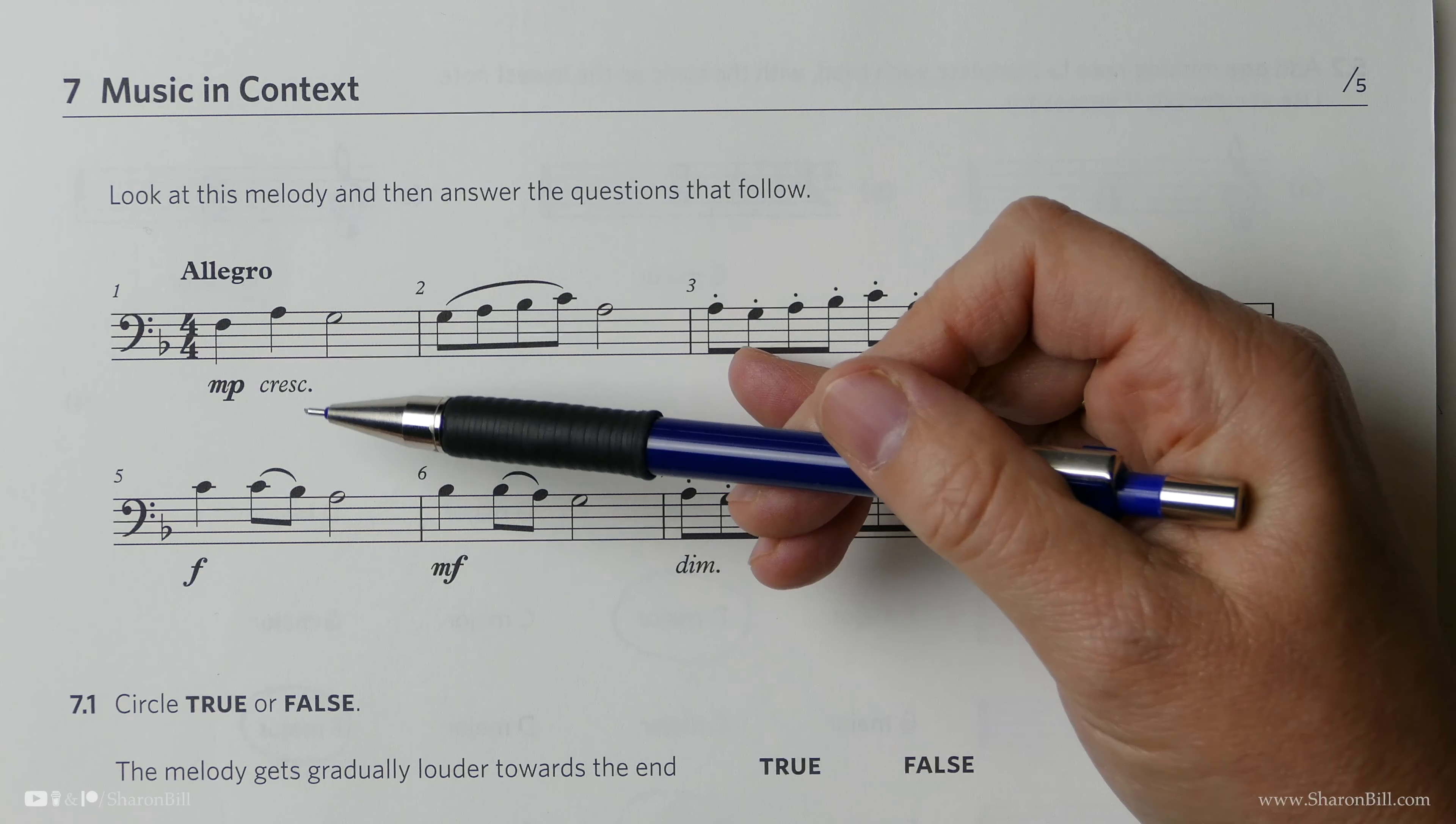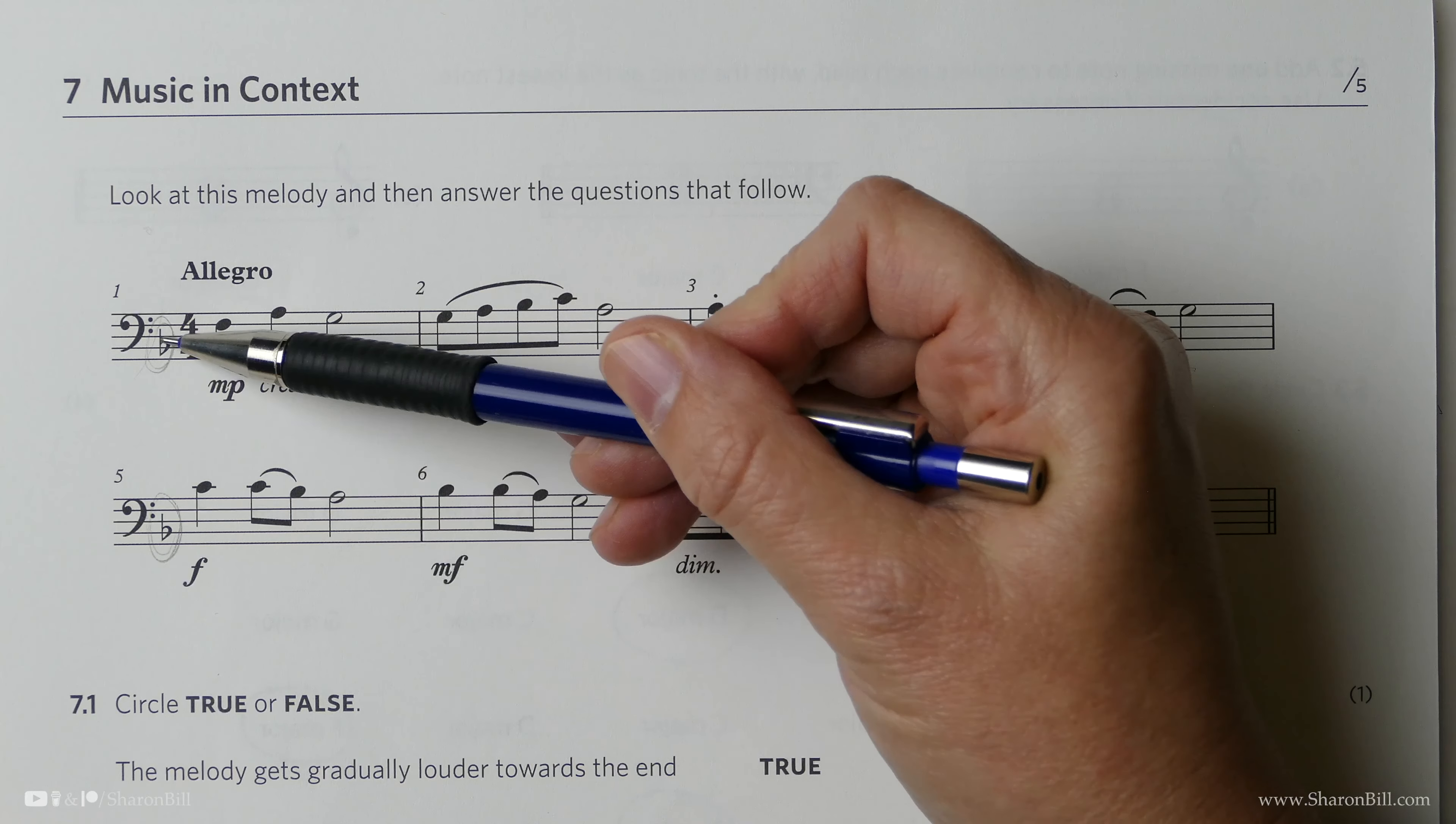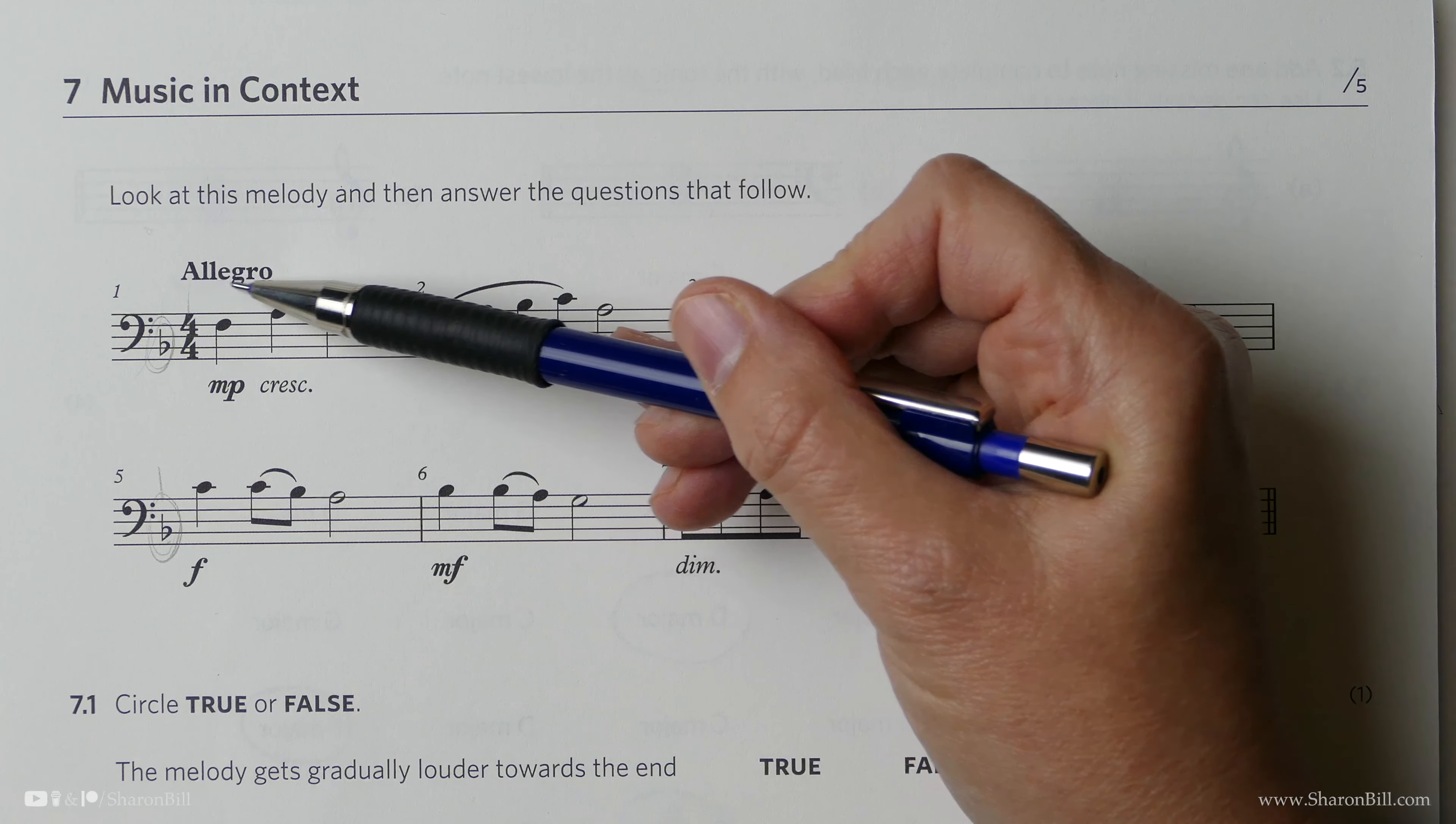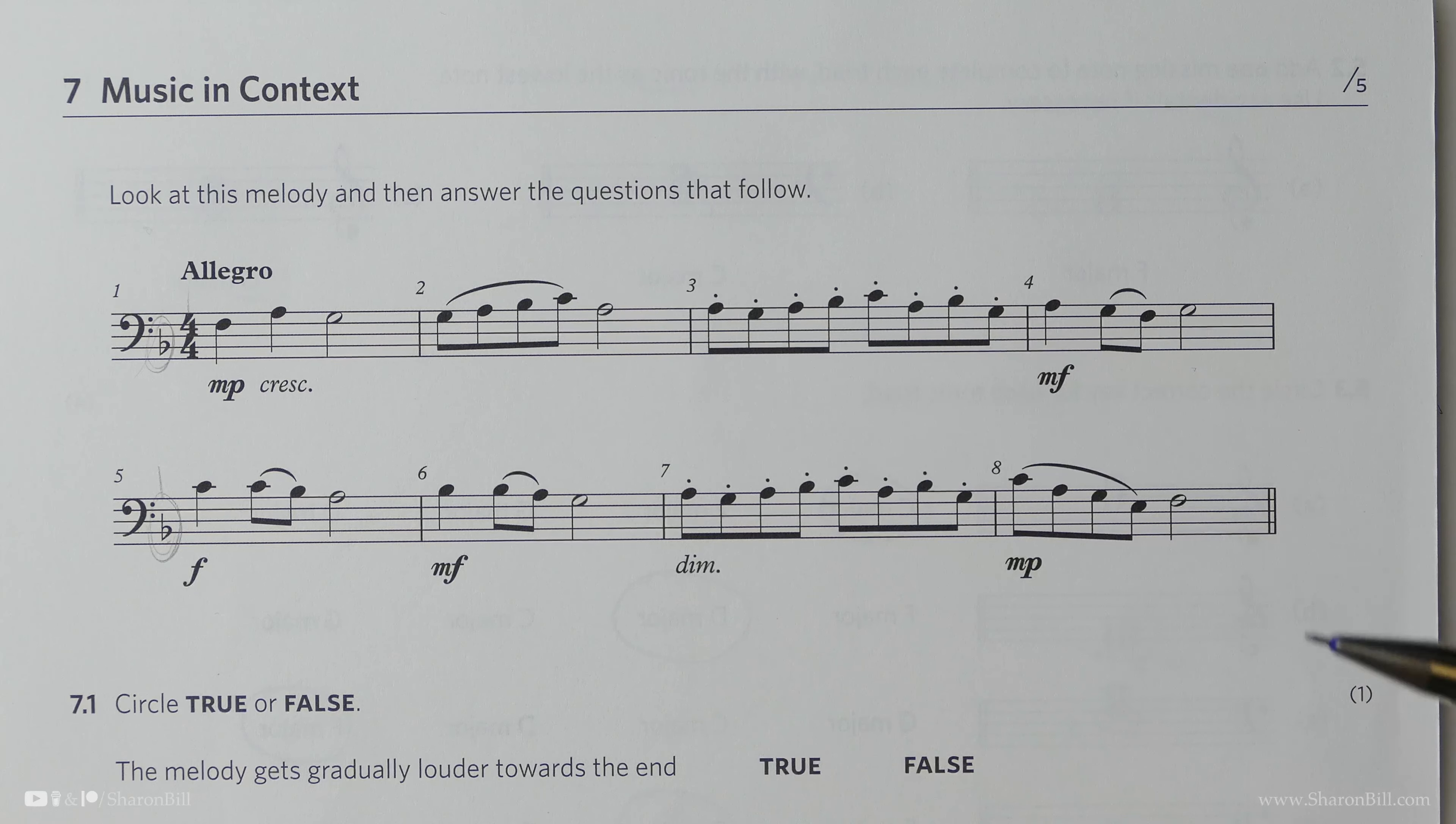So here we have a piece of music that's in the bass clef. We have a key signature of B flat, so there's a clue to something, and we have a time signature, tempo directions, dynamic markings, and articulation markings.